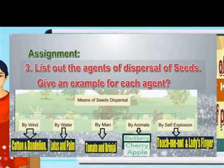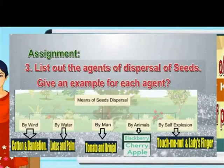By man: tomato, green gram. By animals: blackberry, cherry, apple. By self-dispersal: touch-me-not and lady finger.